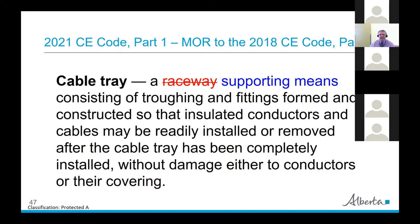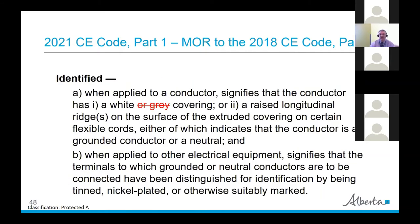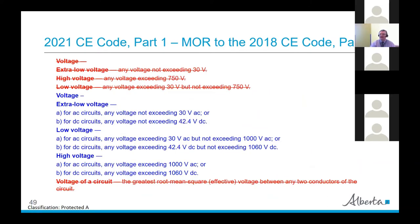Another highlight: the identified conductor. Most SCOs know the identified conductor — the neutral — is white or gray. Gray was used because it was easier to manufacture, but over time that's changed. Now with communications cables often using gray for something else, they've started the process of getting rid of gray as the identified conductor, so it will just be white going forward.